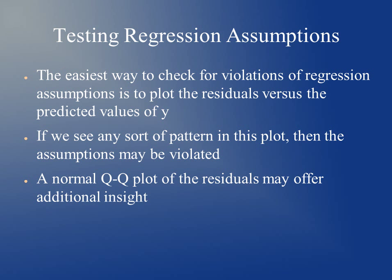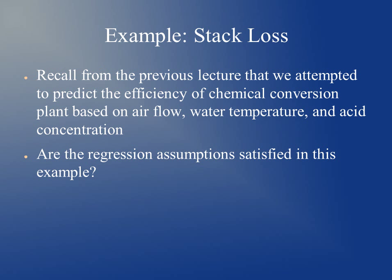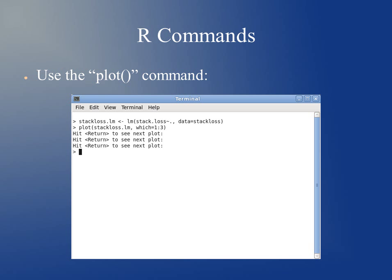We can also use a QQ plot of the residuals to see if the errors are normally distributed. An example of this is the stack loss dataset from previous lectures, where we attempted to predict the efficiency of chemical conversion based on air flow, water temperature, and acid concentration. Air flow, water temperature, and acid concentration are the predictors — the x values — and efficiency is our outcome, the y value. We can use R to plot the data and check if these assumptions are true.